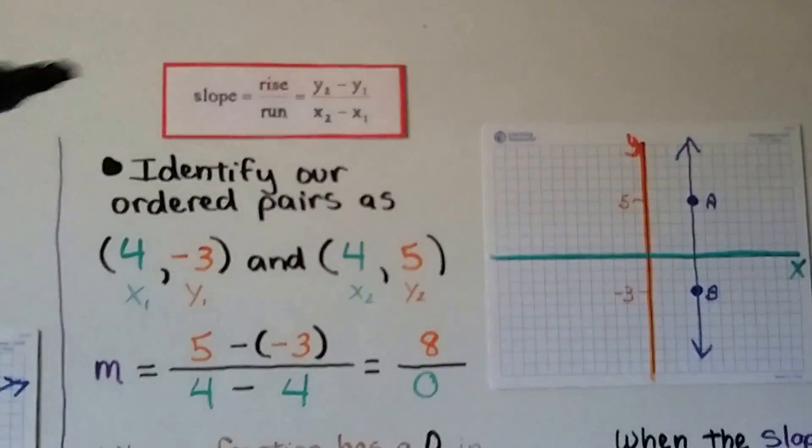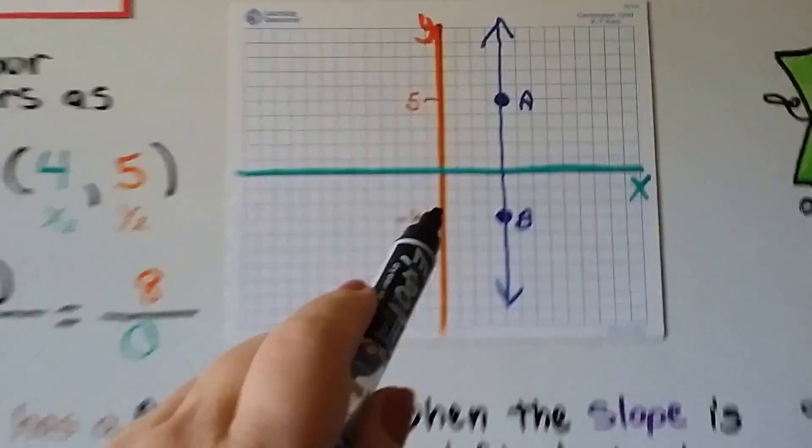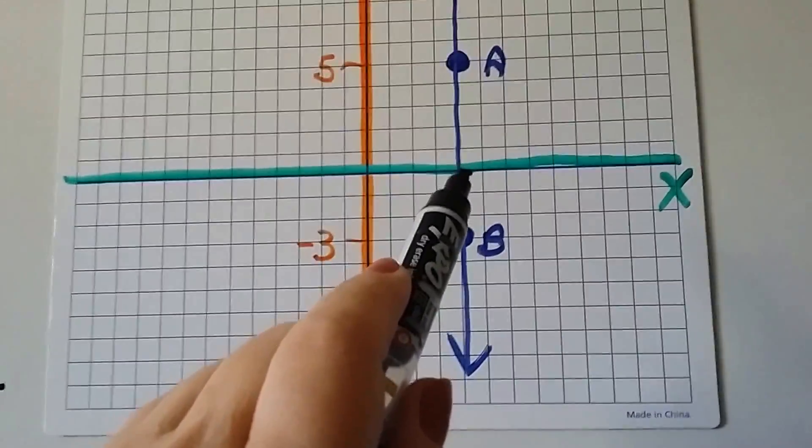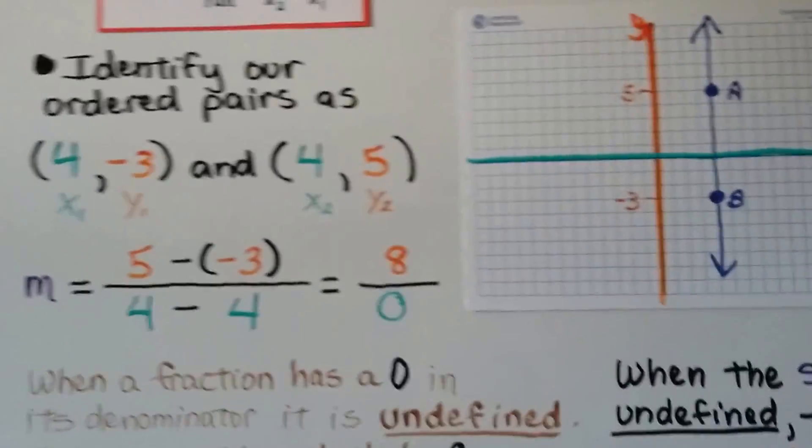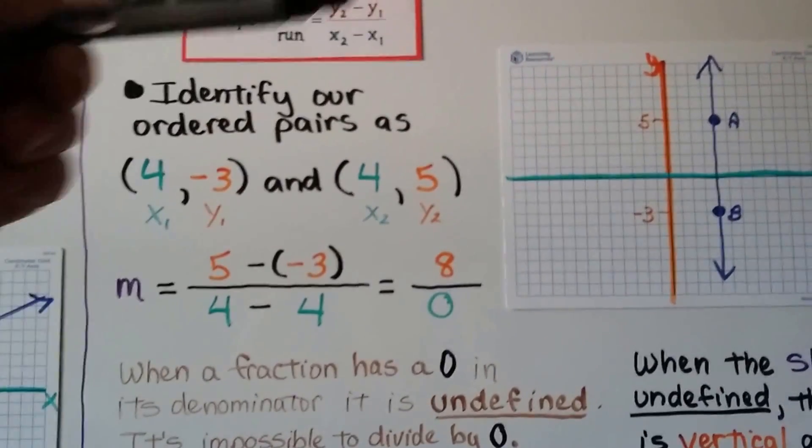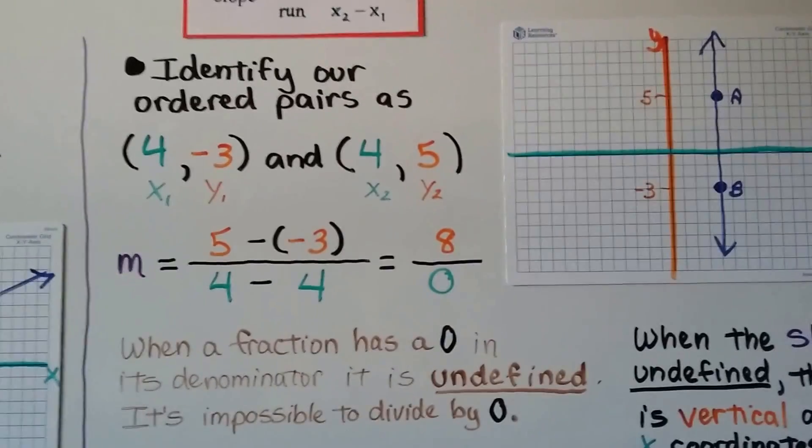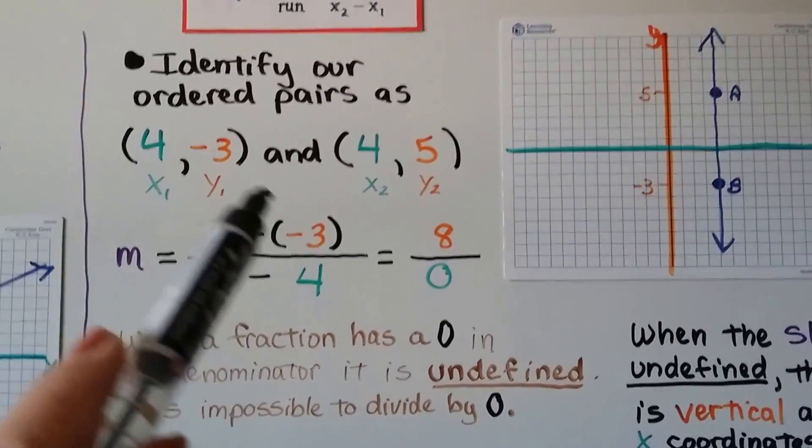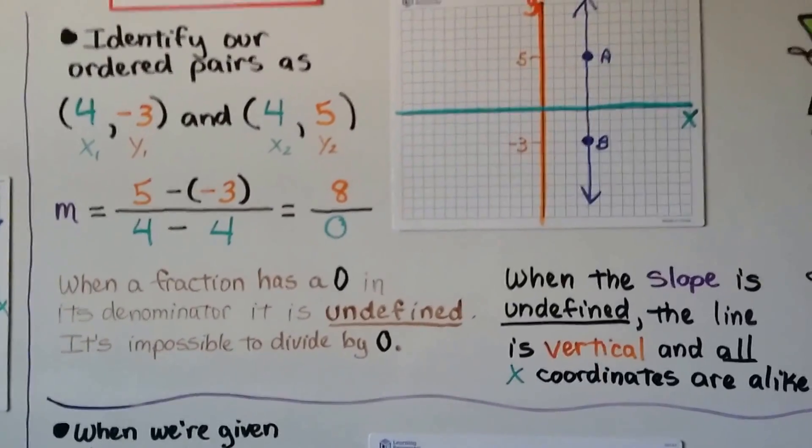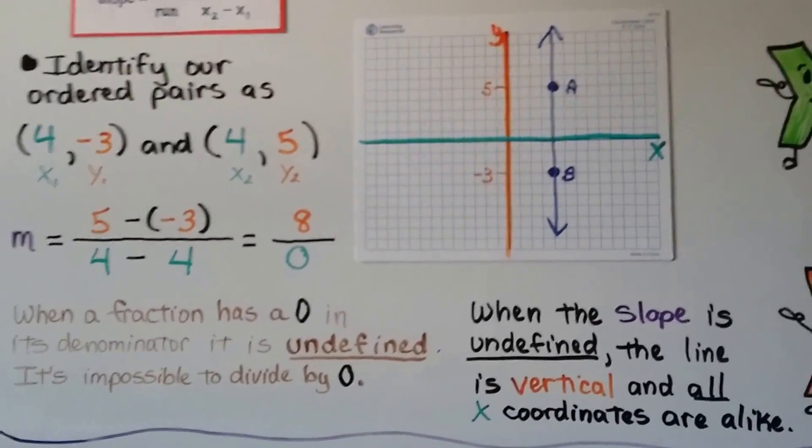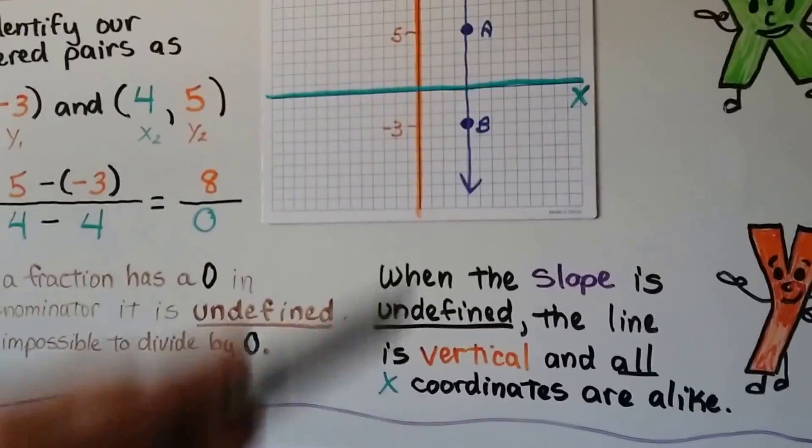So here we have our slope formula right here. The slope is the rise over the run and we use that formula. We can identify our ordered pairs. We've got, if we look at here, we can count the squares. We've got a 4 for x and a negative 3 for y. We have a 4 for x and a positive 5 for y. So those are our ordered pairs. We substitute them into the formula and we get a 5 minus a negative 3 over a 4 minus 4. Remember, when you subtract a negative, you add the opposite. So we're going to do 5 plus a positive 3. So that's going to be an 8. Then we're going to have a 0. But the problem is, when a fraction has a 0 in its denominator, it's undefined. It's impossible to divide by 0. If you look, both x values are the same. When the slope is undefined, the line is vertical and all the x coordinates are alike.